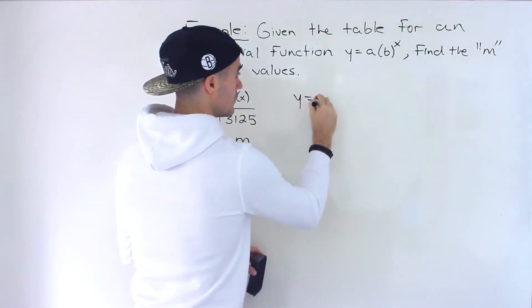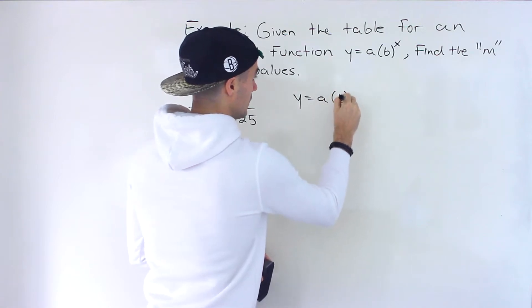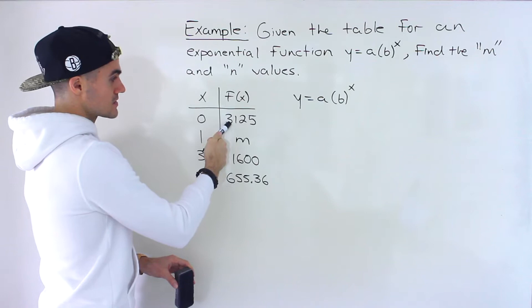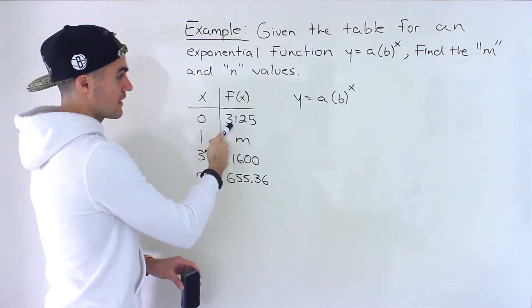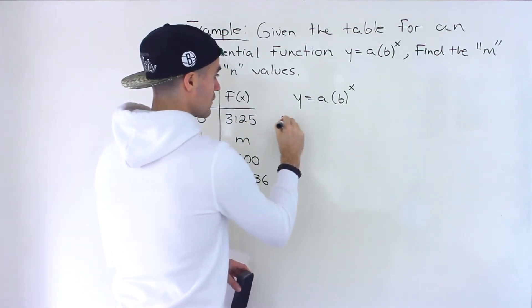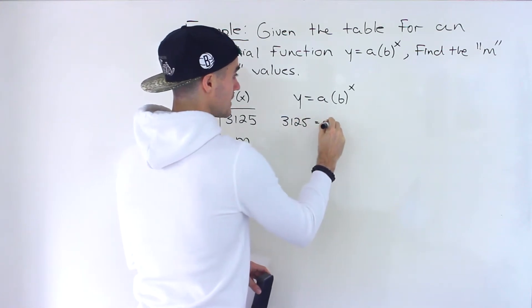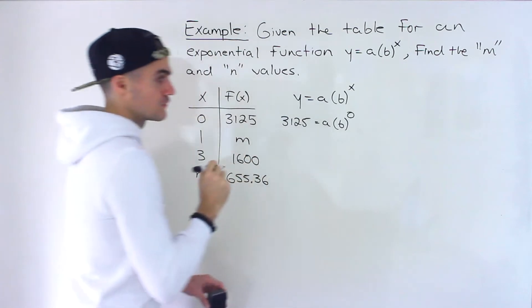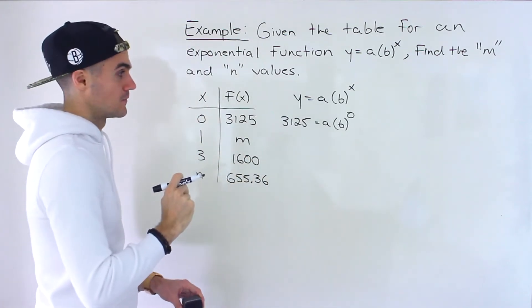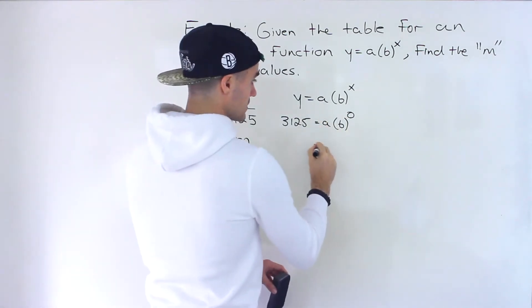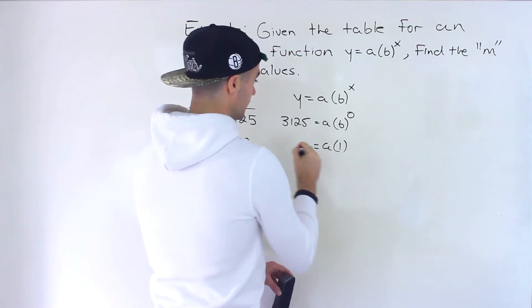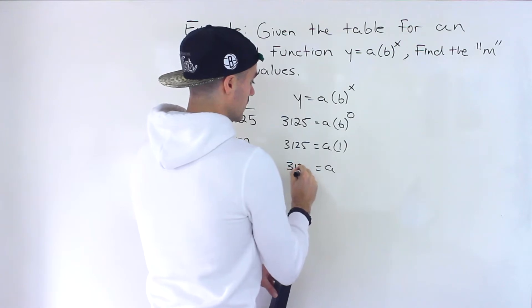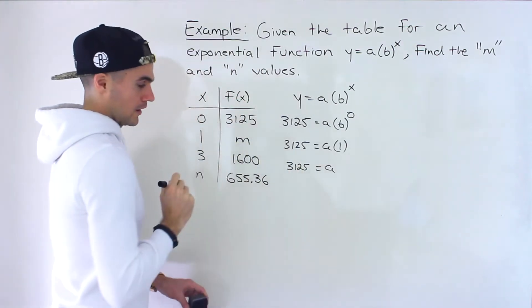So if we rewrite the equation here, let's plug in the first one. So we got zero for x, y is 3,125. So we'd have 3,125 equals a times b to the power of that x value of zero. And then anything to the power of zero is just one. And so notice that the a value ends up equaling 3,125.